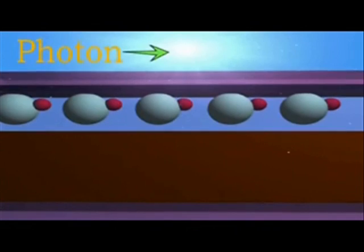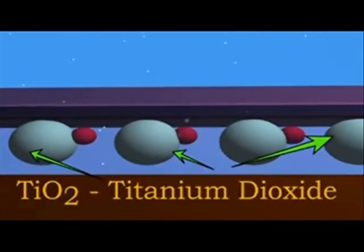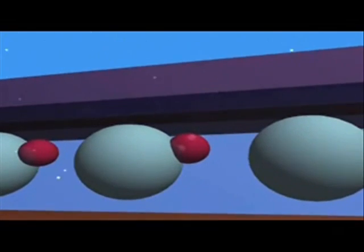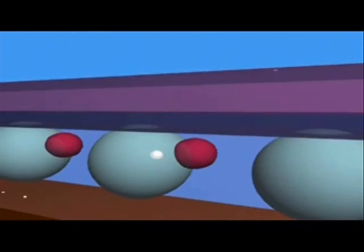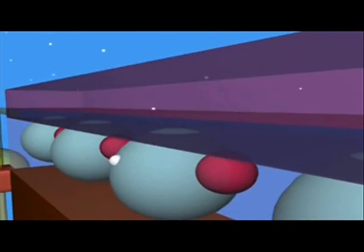A photon strikes a dye molecule absorbed on the surface of the TiO2 causing an excited state which releases an electron into the TiO2 that exits through the conductive layer.